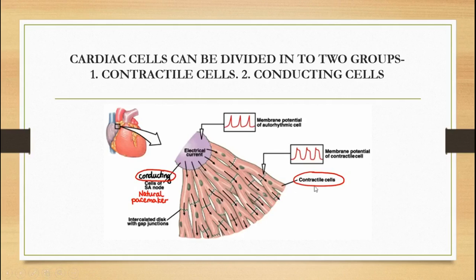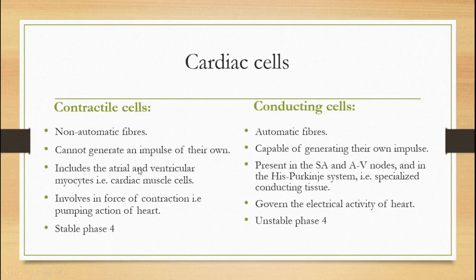Conducting cells generate the electrical impulse and send it to the contractile cells. When the contractile cells receive the impulse, they exhibit excitability and generate a membrane potential, resulting in force of contraction. The key difference is that contractile cells are non-automatic fibers because they cannot generate an impulse of their own, whereas conducting cells are automatic fibers capable of generating their own impulse. Conducting cells include the SA node, AV node, and the His-Purkinje system.